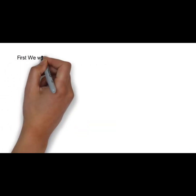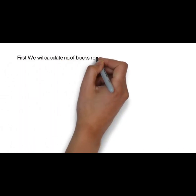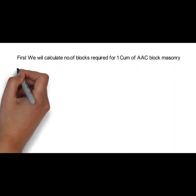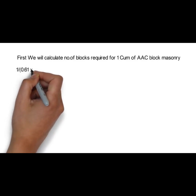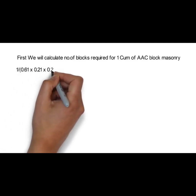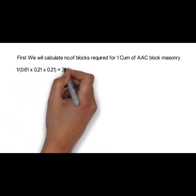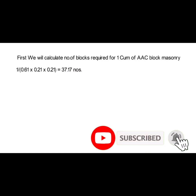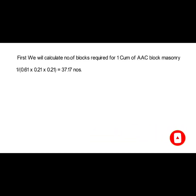First we will calculate the number of blocks required for 1 cubic meter of AAC block masonry. The formula is 1 ÷ (0.61 × 0.21 × 0.21) = 37.17 numbers. Here I have considered 10 mm cement mortar in between the blocks, so I have added 10 mm to the length, width, and height of the block.